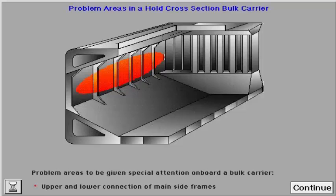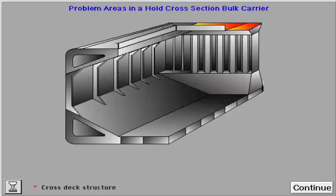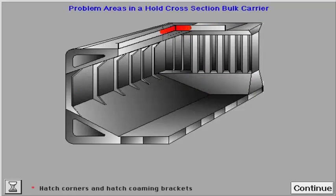Problem areas to be given special attention on board a bulk carrier are upper and lower connection of main side frames, boundaries of transverse bulkheads and bulkhead stools, and cross deck structure.